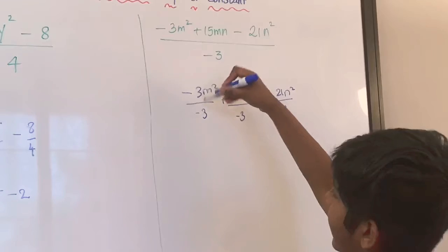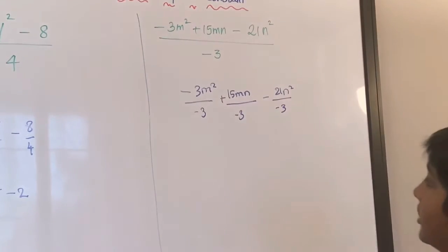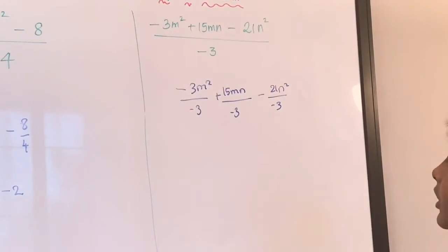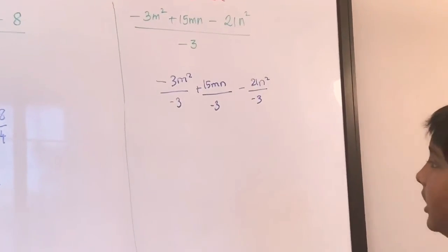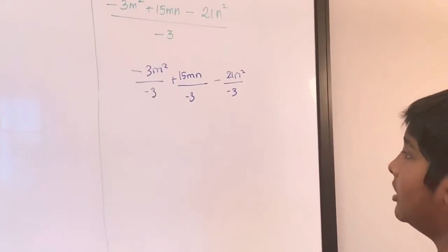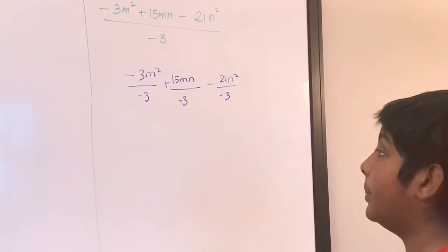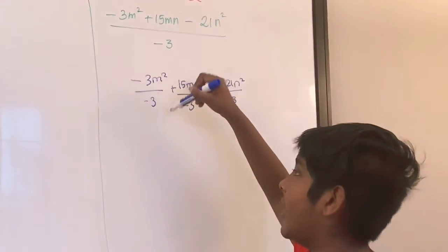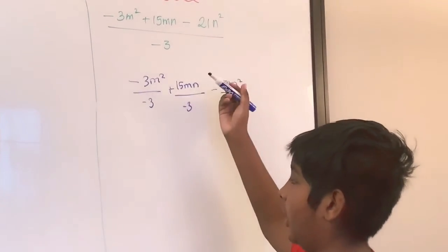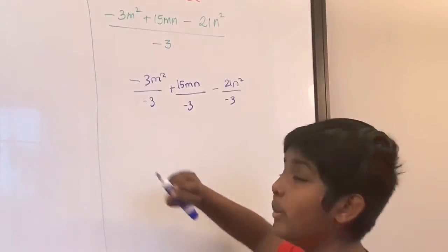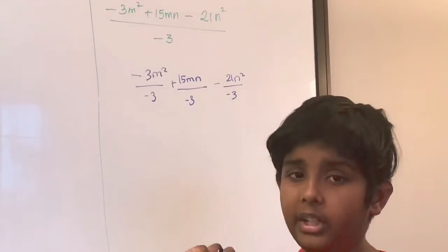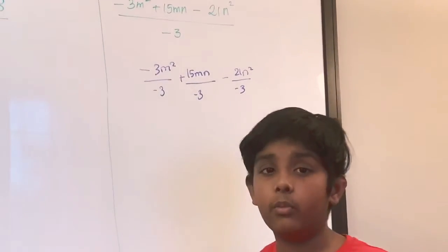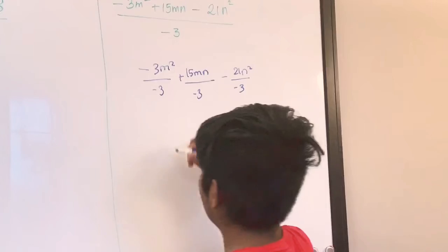Let's divide the first part. A negative number divided by a negative number gives a positive answer. So 3 divided by 3 is 1, making it positive 1. And there's m squared, so that's positive 1m squared.